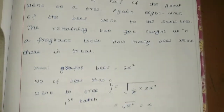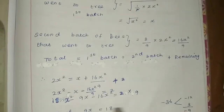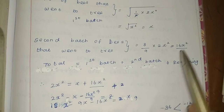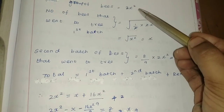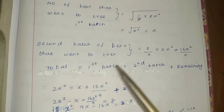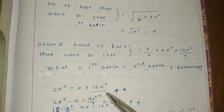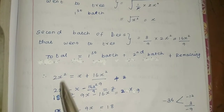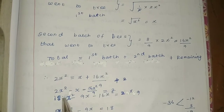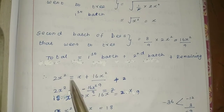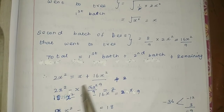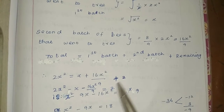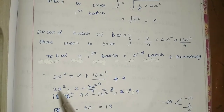Setting up the equation: total bees = 1st batch + 2nd batch + remaining. So 2x² = x + 16x²/9 + 2. Rearranging: 2x² − x − 16x²/9 − 2 = 0.